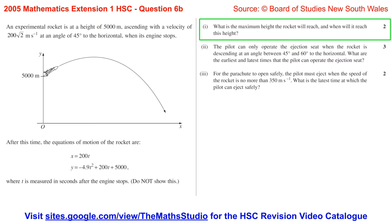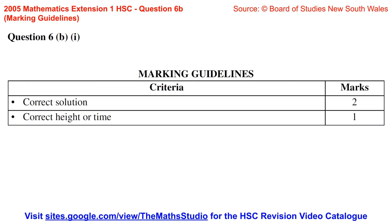Part 1. What is the maximum height the rocket will reach and when will it reach this height? The marking guidelines for Question 6b Part 1: for one mark, correct height or time; for two marks, correct solution.